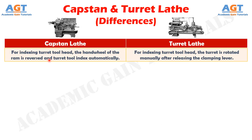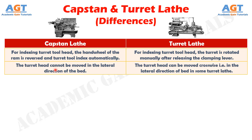In capstan lathe, for indexing the turret tool head, the hand wheel of the ram is reversed and the turret tool indexes automatically, whereas in turret lathe, for indexing the turret tool head, the turret is rotated manually after releasing the clamping lever. In capstan lathe, the turret head cannot be moved in the lateral direction of the bed, whereas in turret lathe, the turret head can be moved crosswise — that is, in the lateral direction of the bed — in some turret lathes.